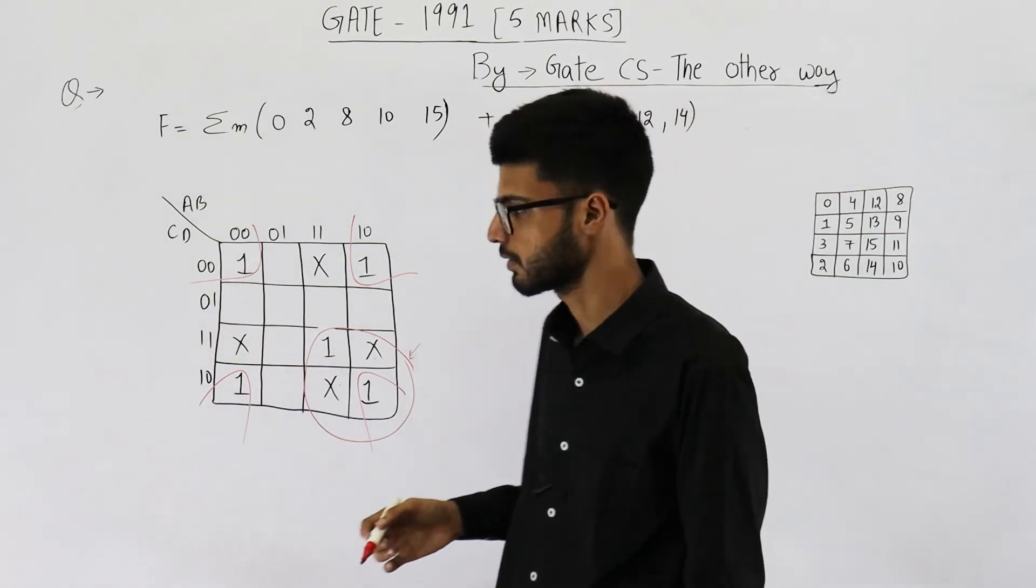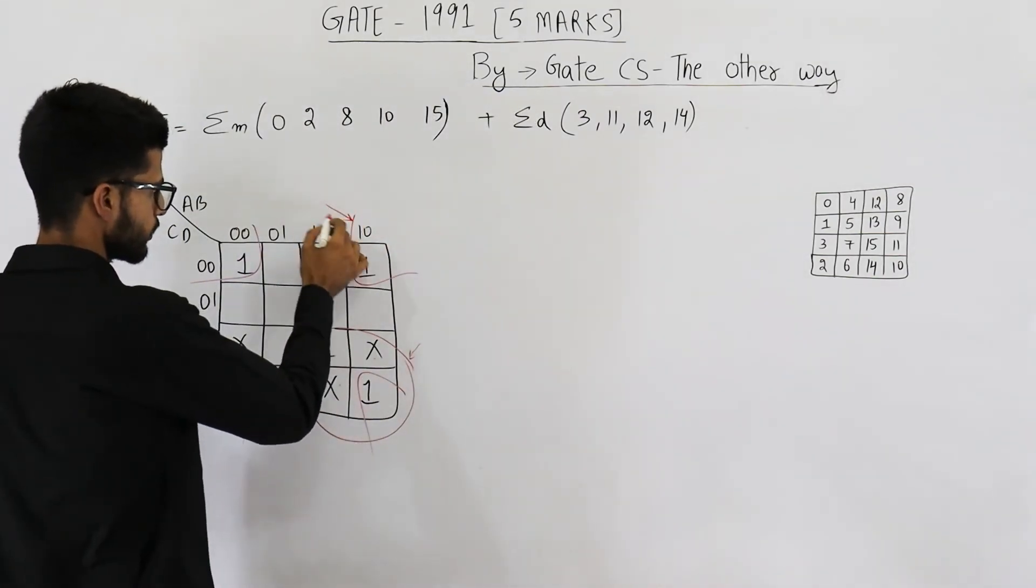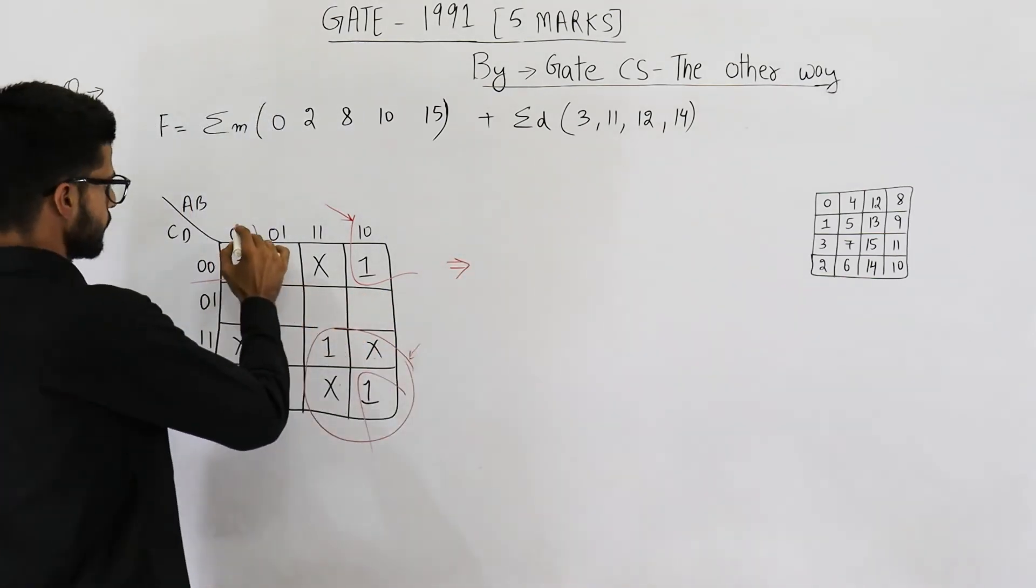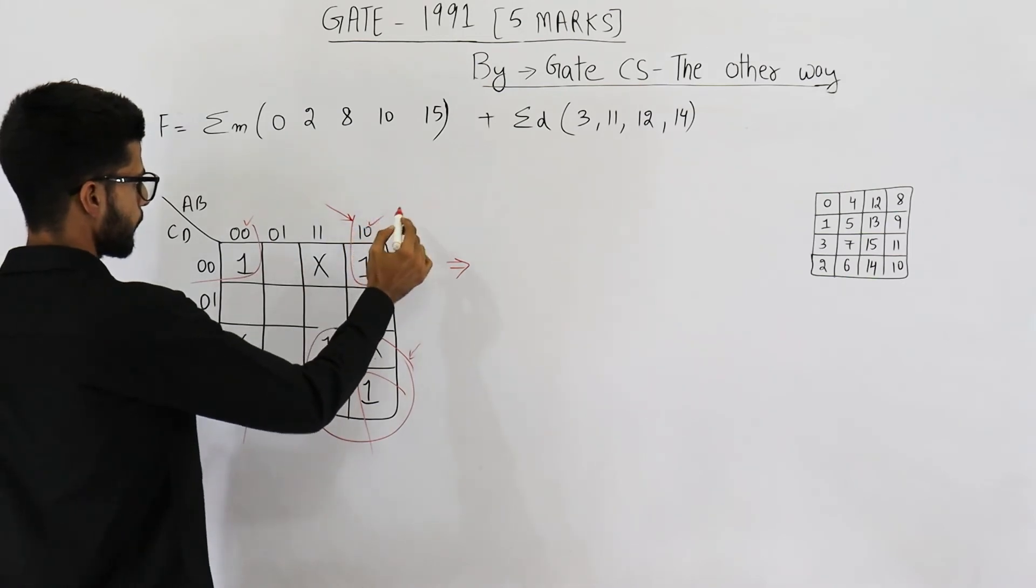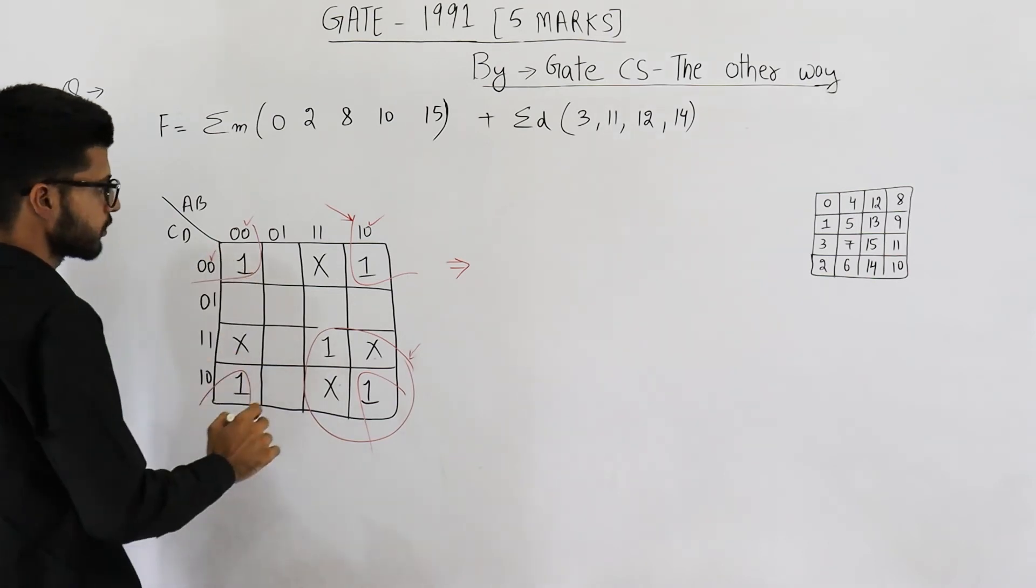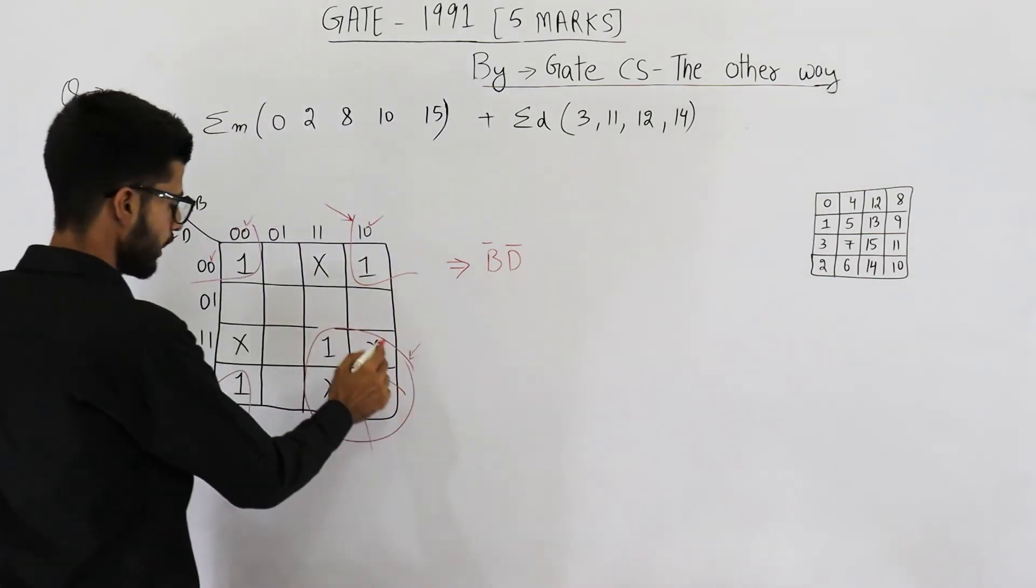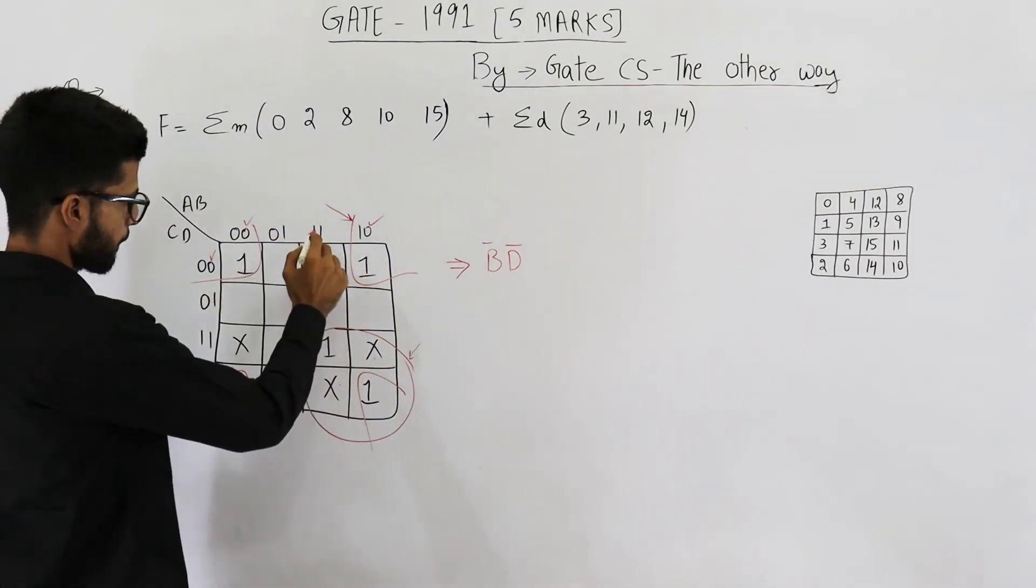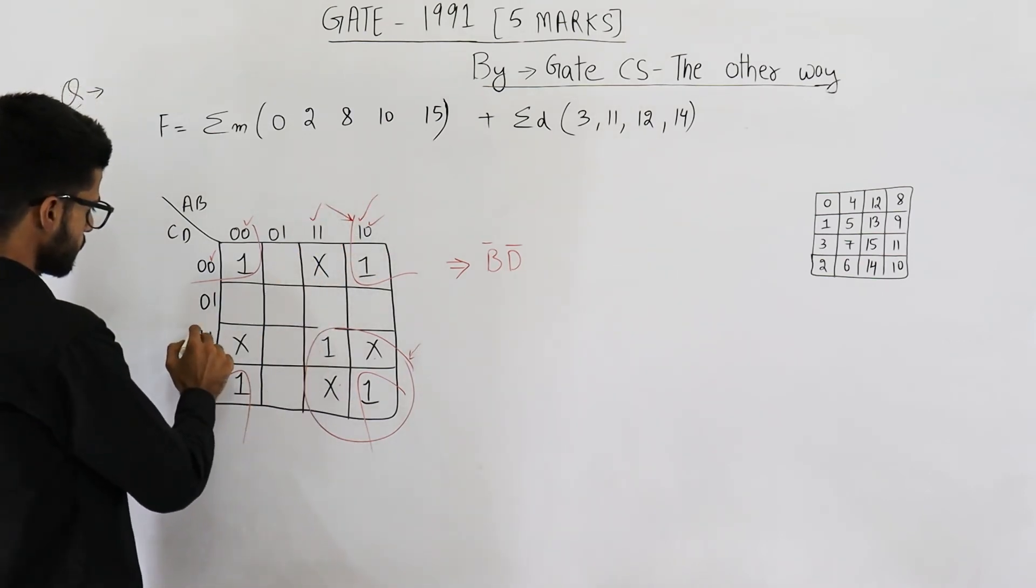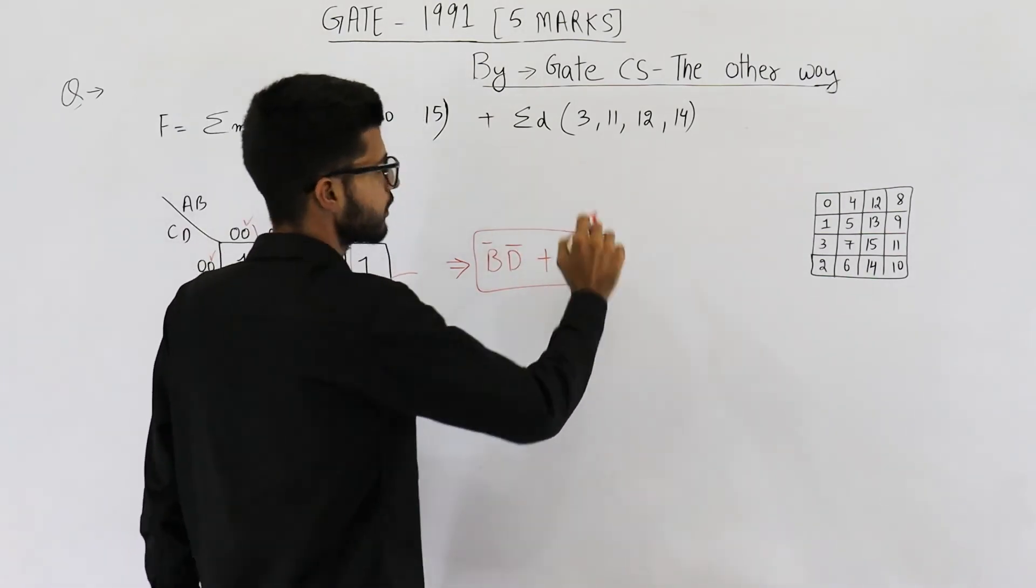Let's write down the answer. You can see for this group, the answer will be: B is common as well as D is common. So it is B bar D bar. And for this one, A is common as well as C is common. So B bar D bar plus AC. This is your answer.